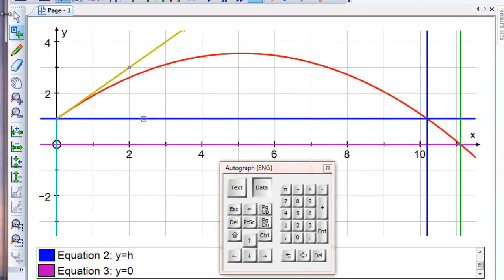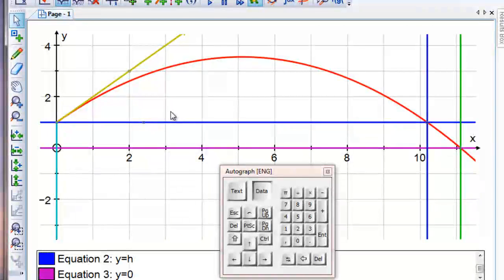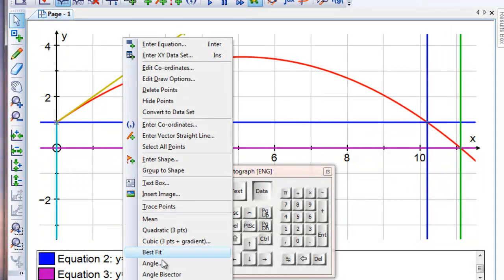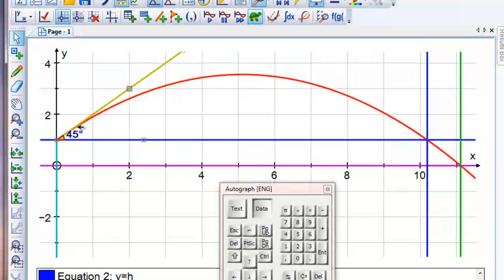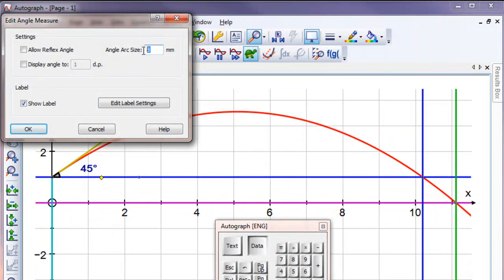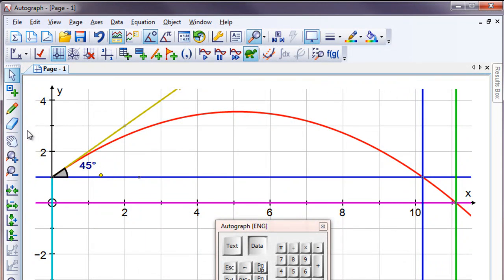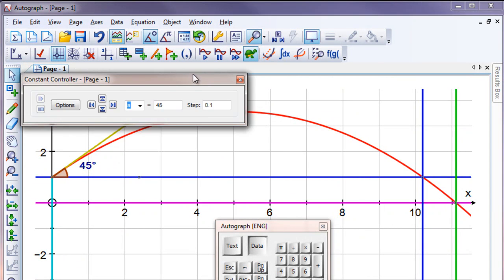Now we want to just measure the angle so we can have this to see. So I'm putting points on the y equals h line and the vector. Selecting them in the anti-clockwise, counter-clockwise direction. Measuring angle. And there we have it. 45 degrees. I'll just make it a little bit bigger. Double click and make the arc size 16 so that it's a bit bigger. That's better.